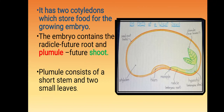The seed has two cotyledons which store food for the growing embryo. The embryo contains the radicle, which is the future root, and the plumule, which is the future shoot. The plumule consists of a short stem and two small leaves.